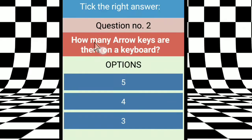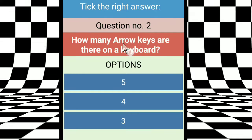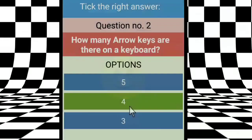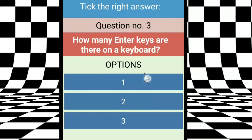Question two: how many arrow keys are there on a keyboard? There are four arrow keys — up arrow key, down arrow key, left arrow key, and right arrow key. So the right answer is four.